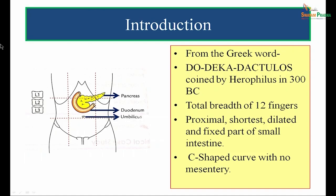Duodenum is the proximal, shortest, dilated, and fixed part of the small intestine. As you can make out in the picture, it has a C-shaped curve, and in the concavity fits the head of the pancreas. The C-shaped duodenum does not have any mesenteric fold attached to it.